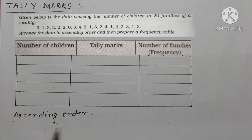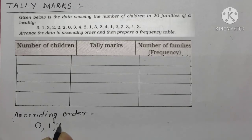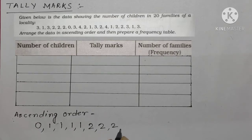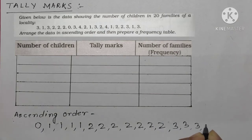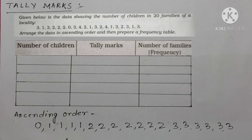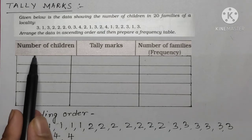In this data the numbers go from zero to four. Arranging in ascending order: zero is occurring only one time; one is occurring four times; two is occurring seven times; three is occurring six times; and four is occurring two times.